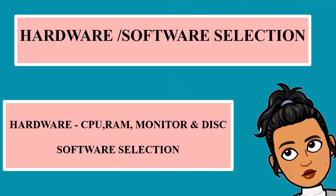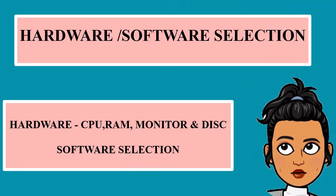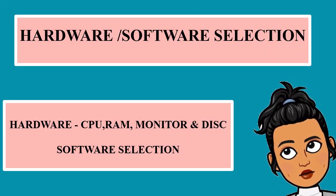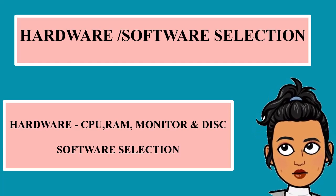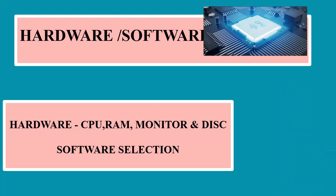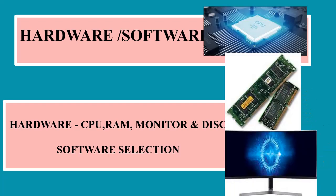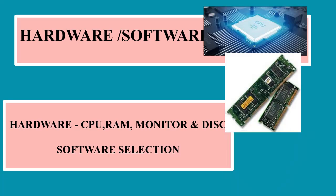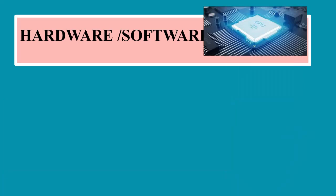After completing the plan, budget and roles and responsibilities, production team members will select the specific hardware and software required for their multimedia project. This selection process involves selection of the fastest CPU, RAM, huge monitors, sufficient disk and suitable software.